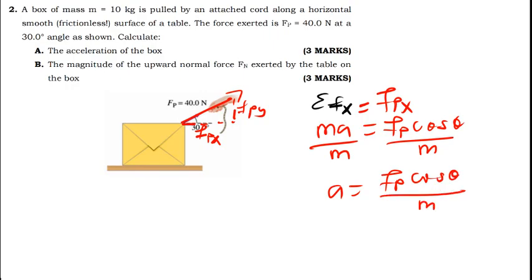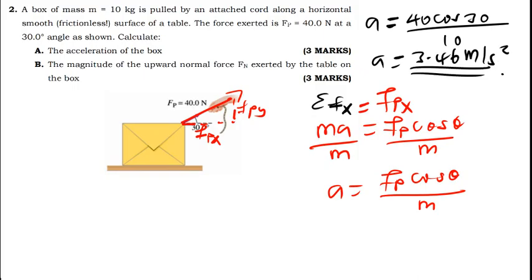Now I can plug in the values. So Fp which is the force is 40, cos theta is 30, divided by M which is the mass which is 10. So if I do 40 cos 30 then I divide this by 10, it's giving me 3.46 m per second squared. That is my acceleration in this case.